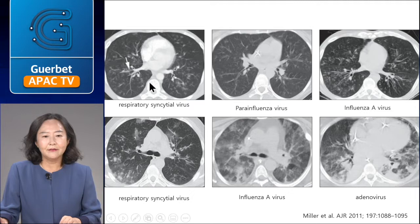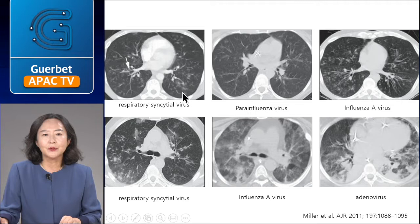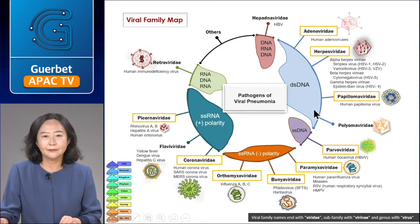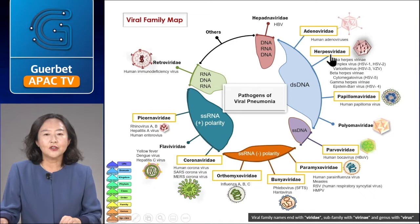These are images from an article. Ill-defined centrilobular ground-glass opacities are shown in RSV, parainfluenza virus, and influenza A virus, representing airway inflammation. Airway filling may be noted as ground-glass opacity or consolidation in influenza A virus and adenovirus. These findings are somewhat disappointing because of diverse and overlapping imaging findings between viruses and even other pathogens. However, viruses in the same viral family share a similar pathogenesis of pneumonia, and the imaging patterns have distinguishable characteristics. Although not all cases manifest with typical patterns, most typical imaging patterns of viral pneumonia can be classified according to viral families.